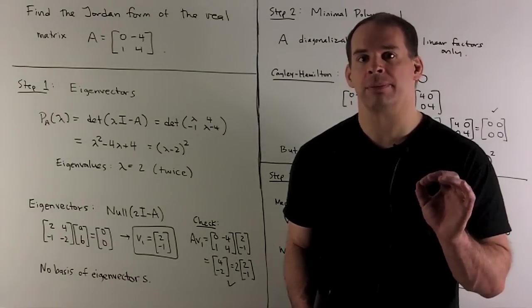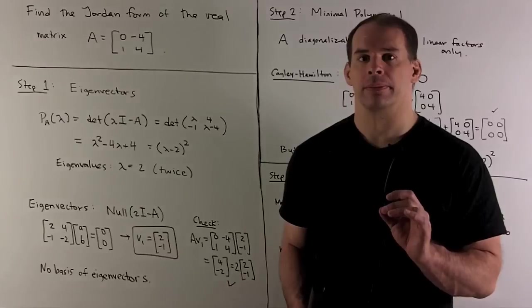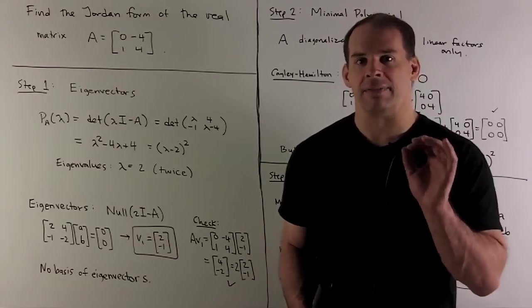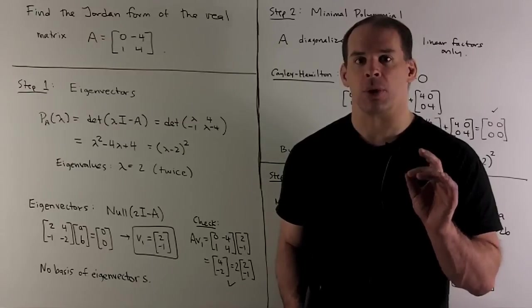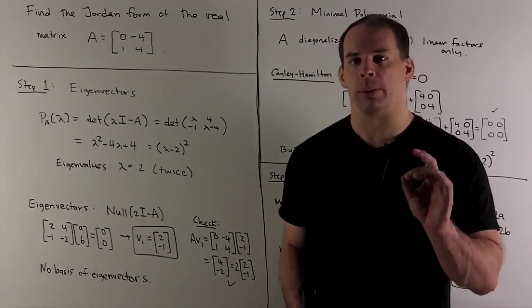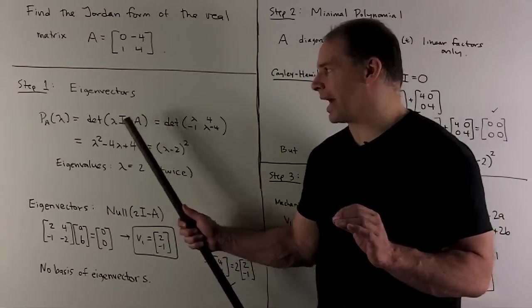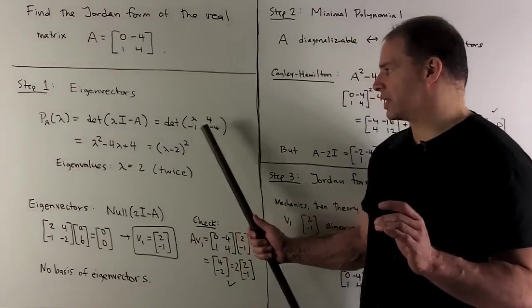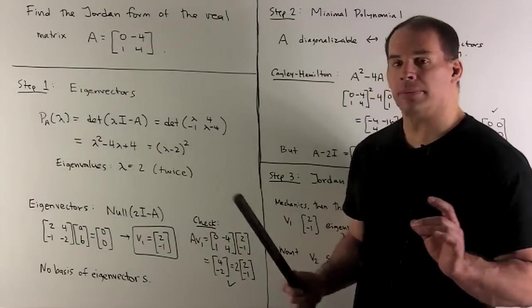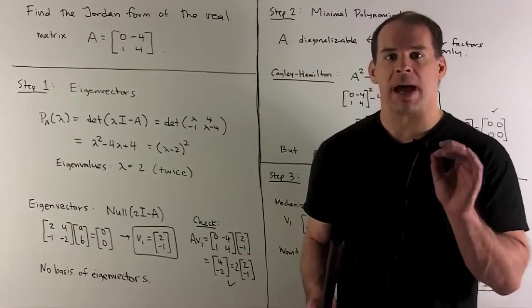As an alternative, we'll try Jordan form. First step, let's see what eigenvectors we can find. So I form my characteristic polynomial, determinant of λI minus A. We get this matrix, I take its determinant. What comes out, we get (λ - 2)².